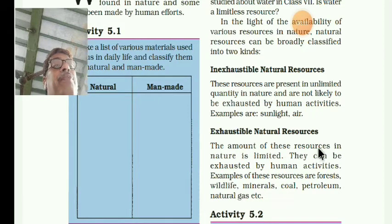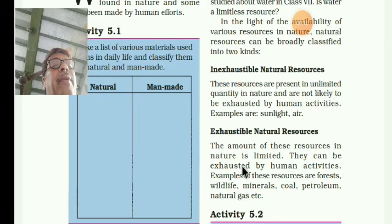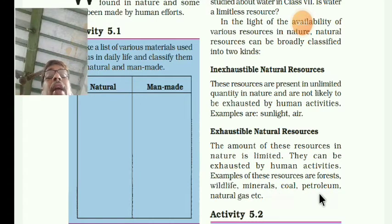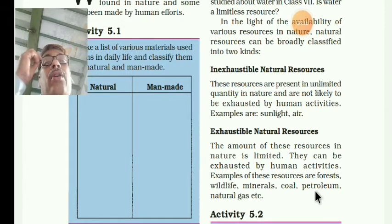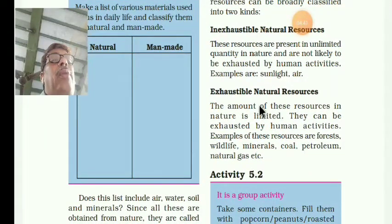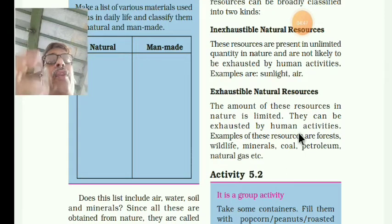The amount of exhaustible resources in nature is limited. They can be exhausted by human activities — after using them, they will get over. For example, wildlife, minerals, coal, petroleum, natural gas — after using them it will get empty, and it takes a very long time to form them again.